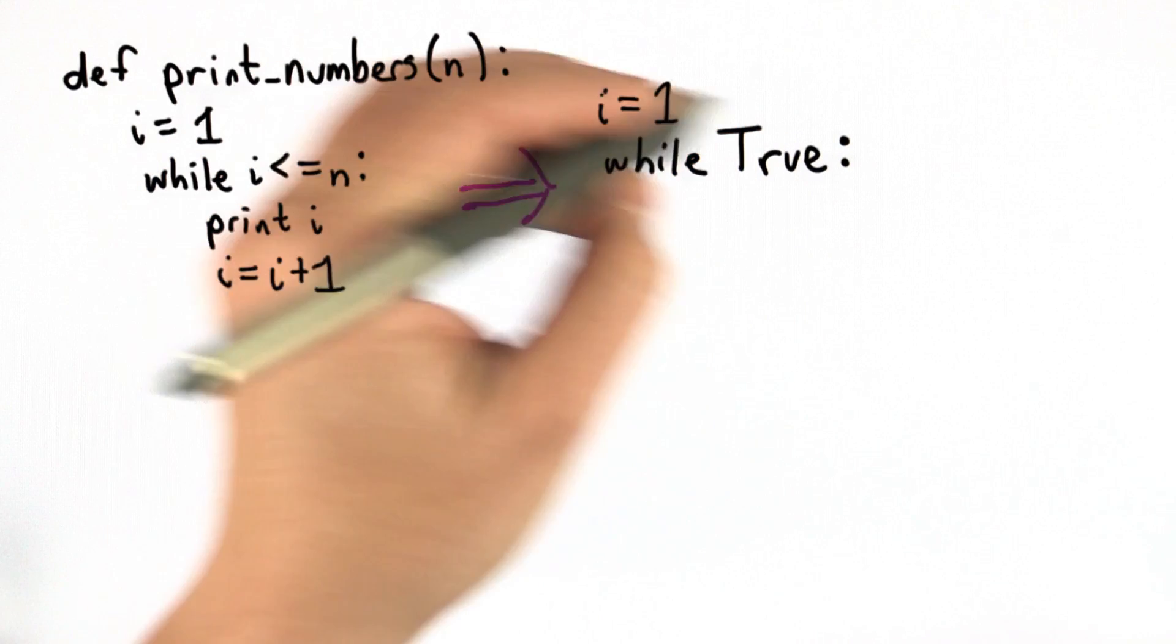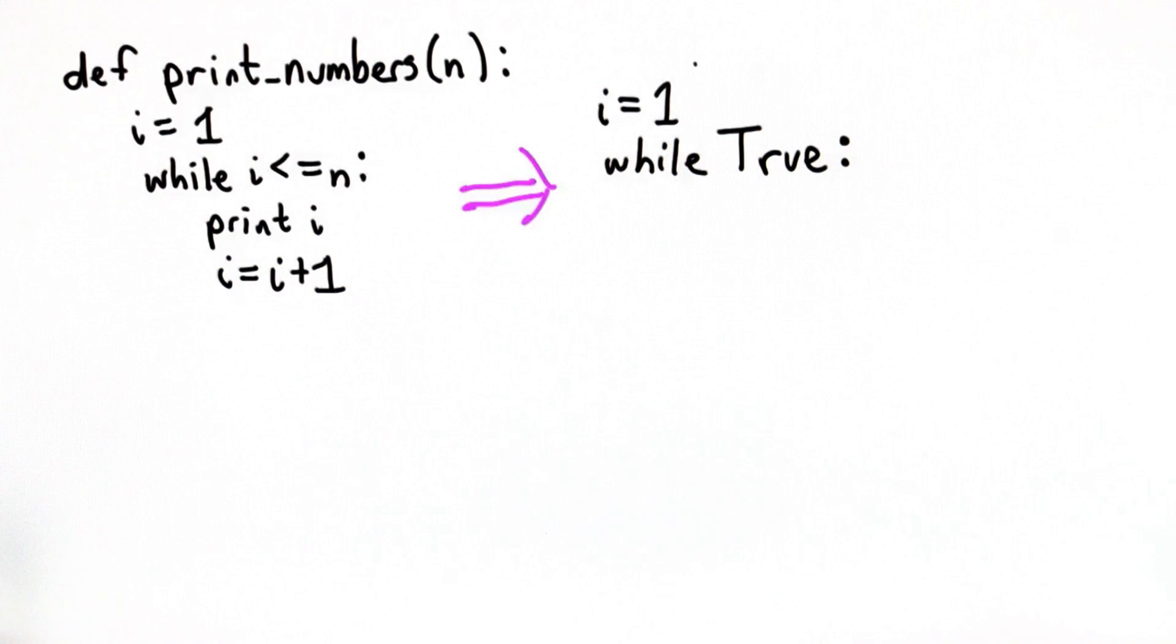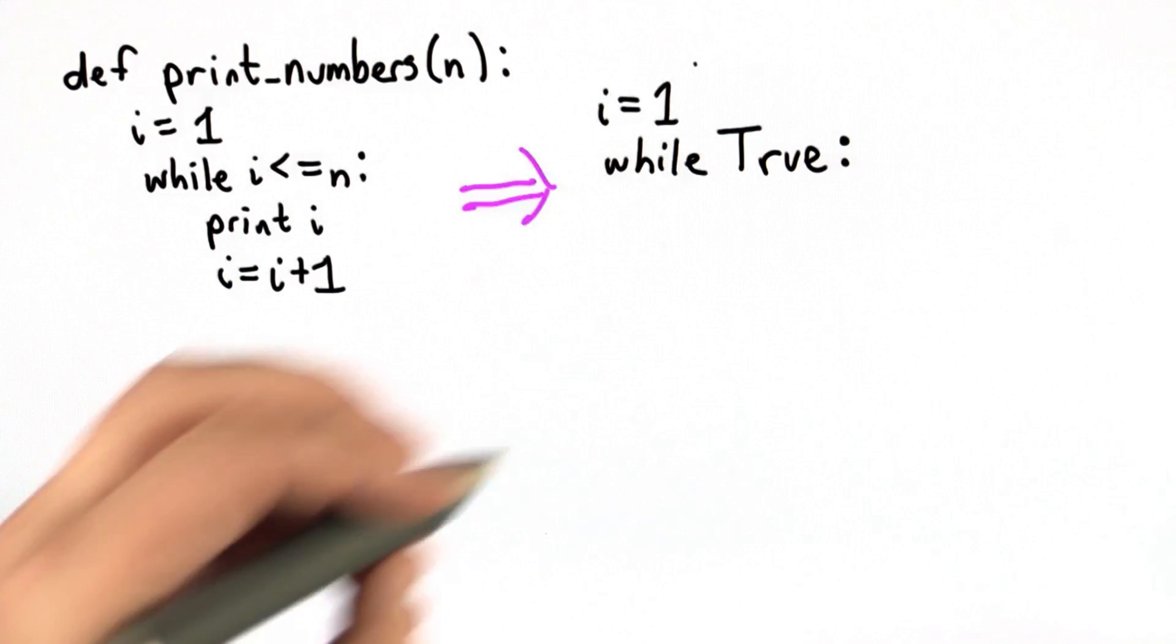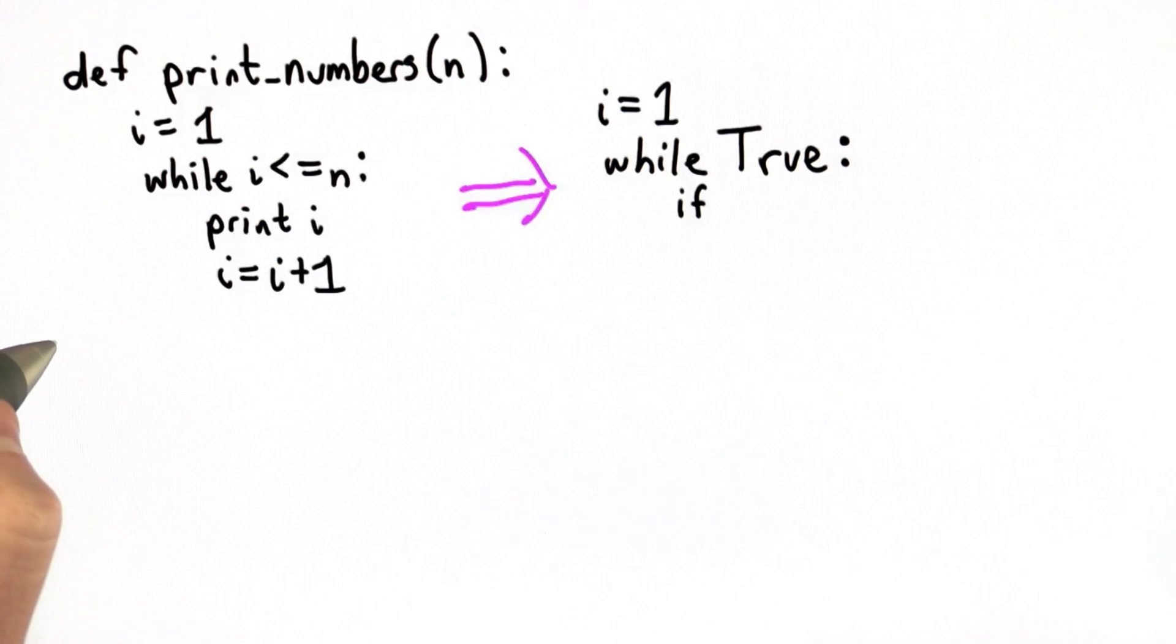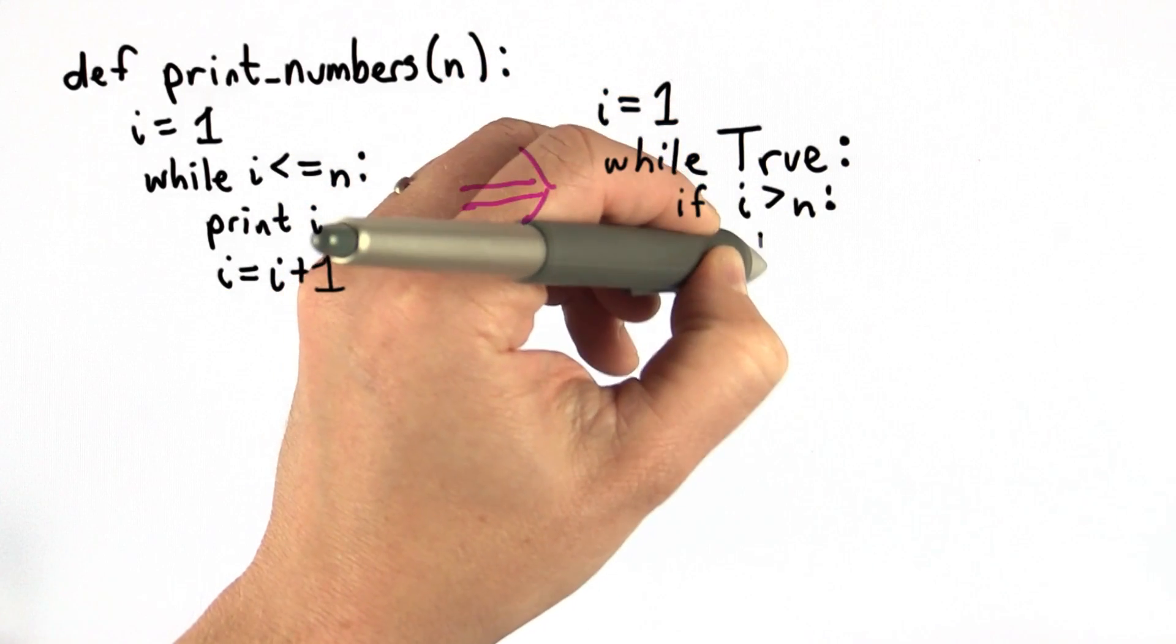That means if we didn't have a break, the loop would keep going forever. But we're going to add a break with an if test. The stopping condition is we're going to stop once i is greater than n, and the way to stop is to use break.